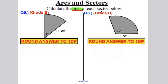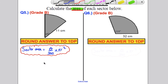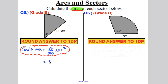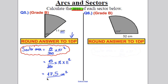Now we're dealing with areas of sectors — this is grade B level. Similar to arc length, the area of a sector is the fraction of the circle multiplied by the area of a whole circle: area = (θ/360) × πr². Substituting in: area = (45/360) × π × 11² = 47.5 centimetres squared to one decimal place. Underline your work.